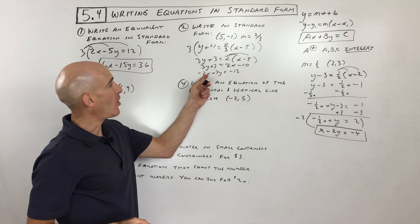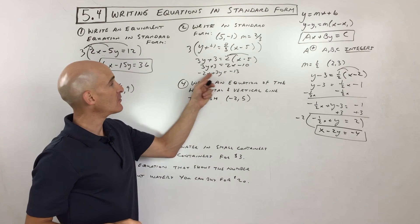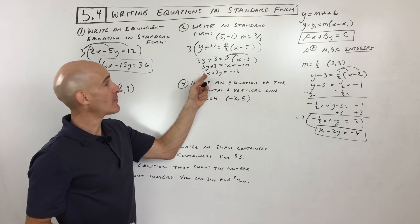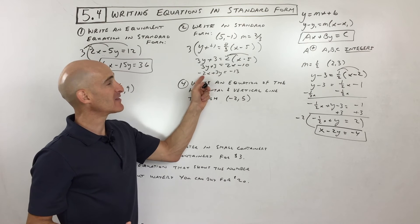I'm going to subtract 3 from both sides. Almost there, we've got all the variables on the left, numbers on the right. We've got integers, but we want it to start with a positive a value, the number in front of the x. So what can we multiply by to make this positive?